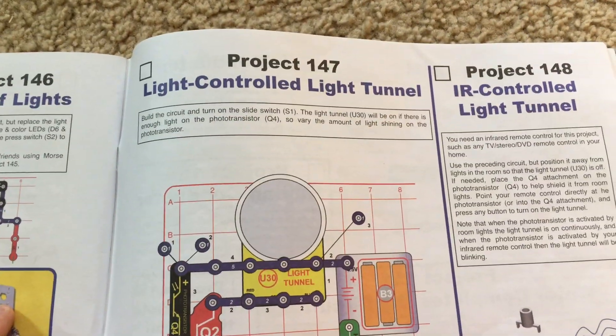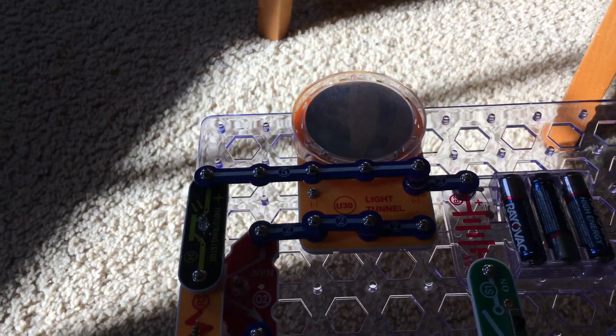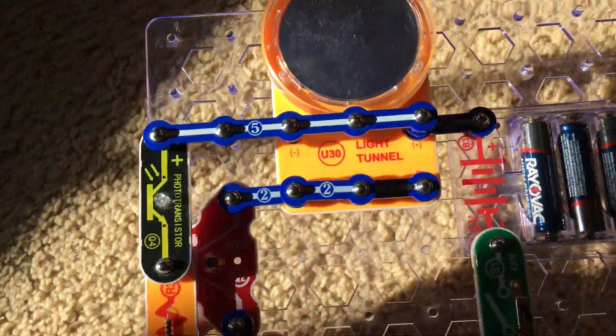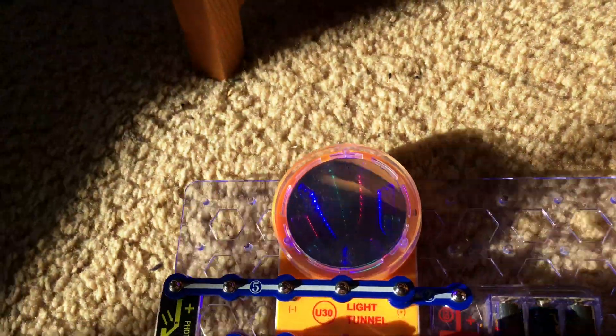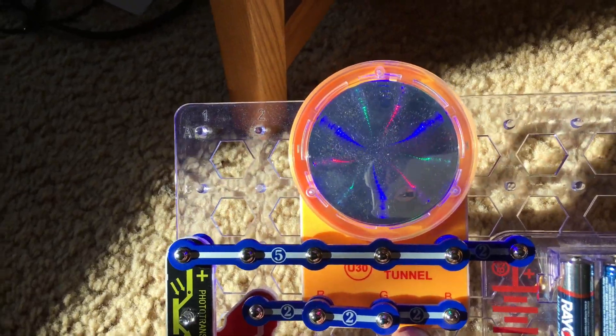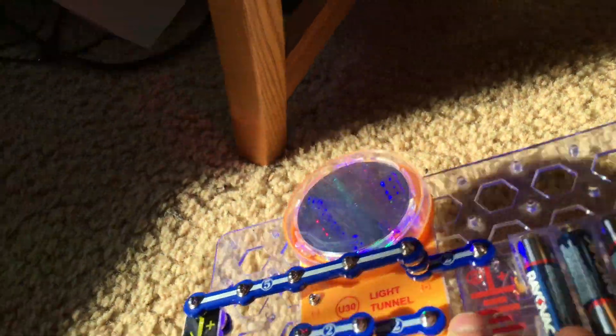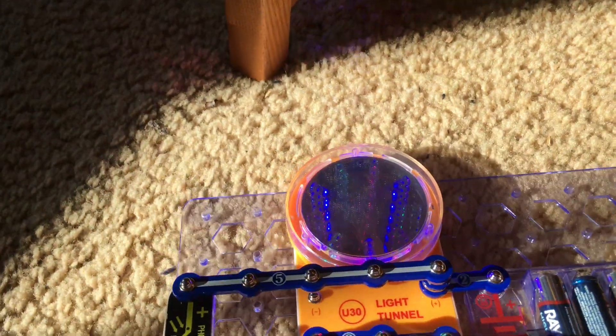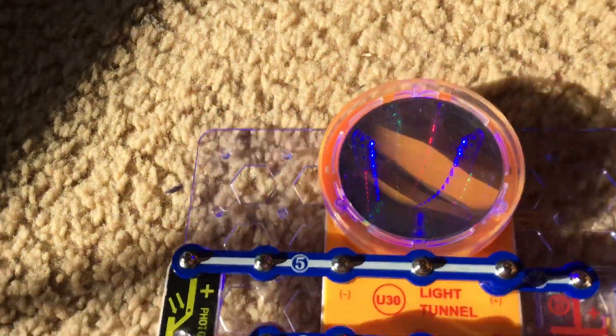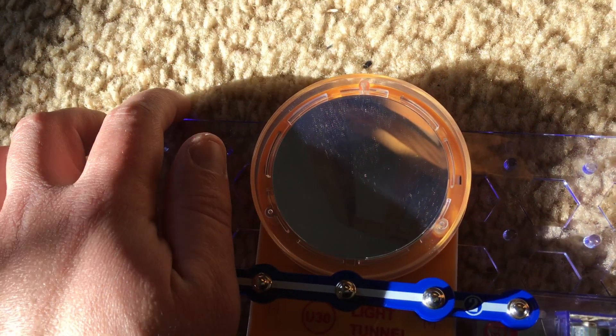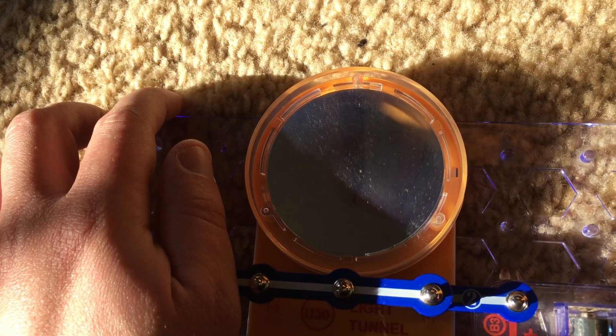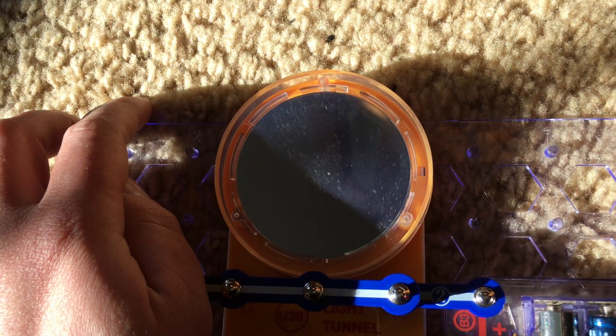Project 147, Light Controlled Light Tunnel. Using this circuit, we will place it in a brightly lit area so that there's light on the photo transistor. The more light there is, the brighter the light tunnel will get. And then if you were to cover the photo transistor or move the circuit into a darker area, the light tunnel will go off because electrical resistance increases when there's less light on the photo transistor.